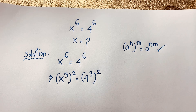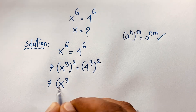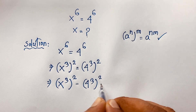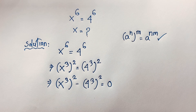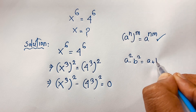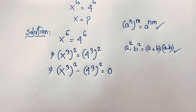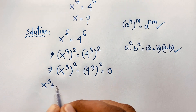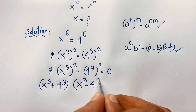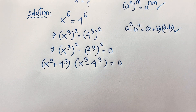I apply this exponential formula here. Now I move this expression to one side, so it will be x to the power 3, bracket power 2, minus 4 to the power 3, bracket power 2, is equal to 0. Then we know that a squared minus b squared equals a plus b times a minus b. If I apply this formula here, it will be a plus b times a minus b is equal to 0, giving us 2 cases.